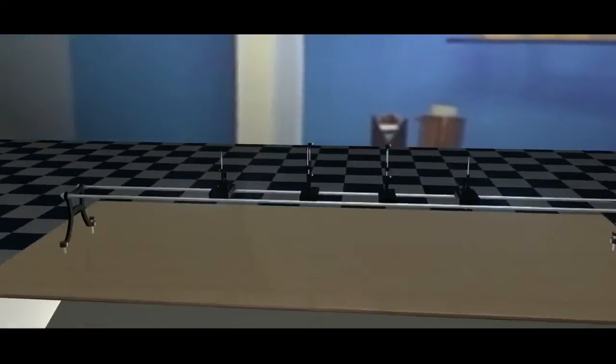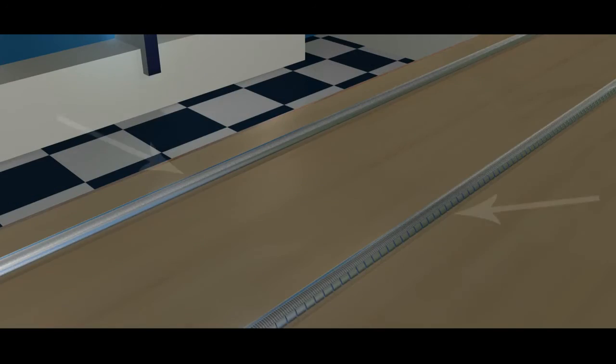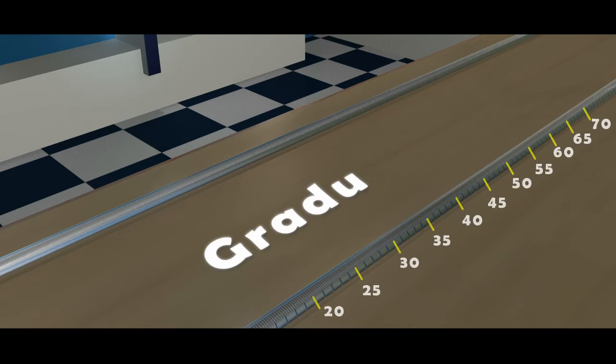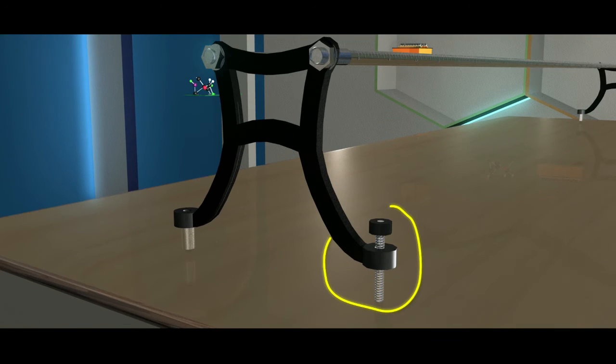Optical bench is made up of metal. It consists of two metal rods of length 1.5 meter each. These rods are fixed parallel to each other on two metallic stands. One of the rods is graduated along its length in millimeters. As you can see, these stands have leveling screws.